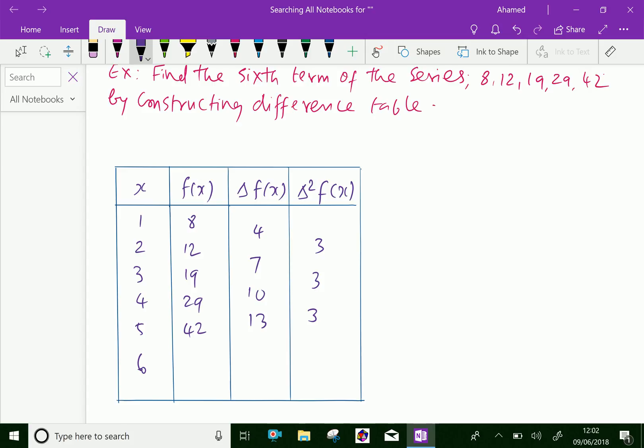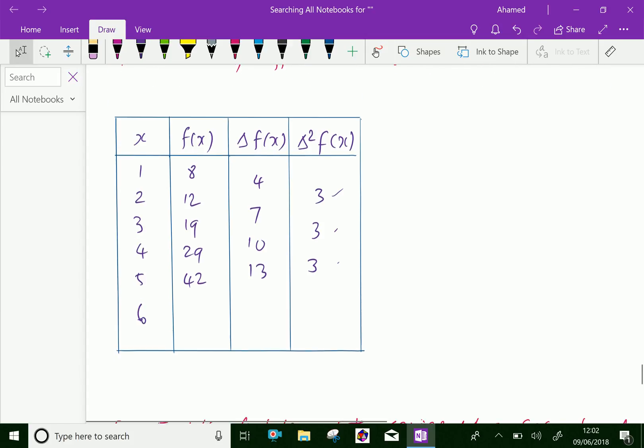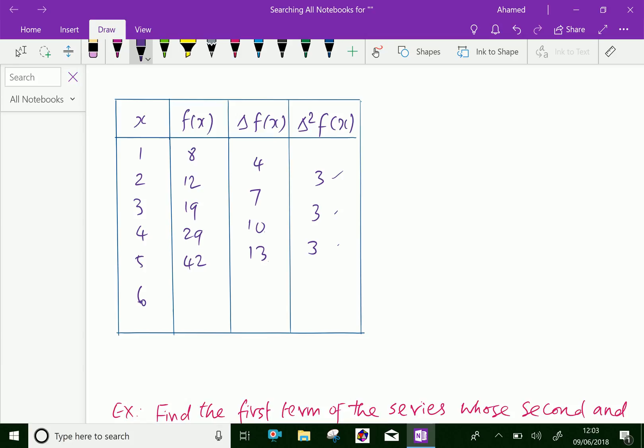Note the point: the value of delta square f(x) are all equal to 3. Then write the sixth row and put 3 in the column of delta square f(x), which means add 3 to the 13. So 13 plus 3 gives us 16, meaning 16 minus 13 is also 3. We got the delta f(x) of the sixth value. Here, add 16 to 42, we get 58.